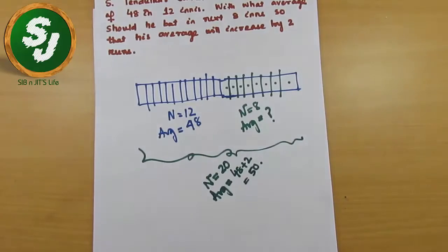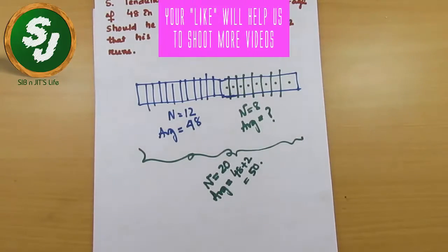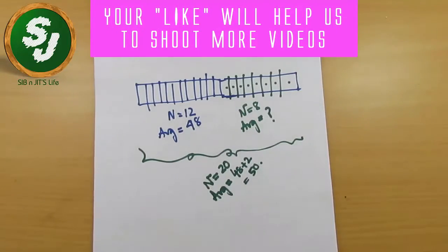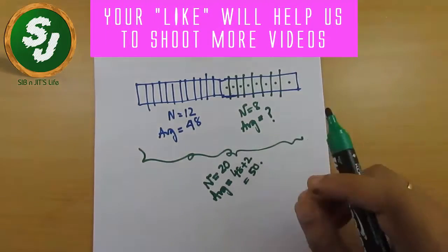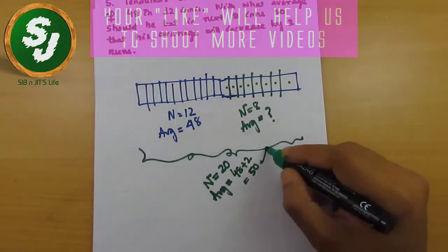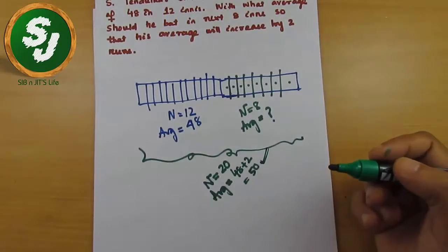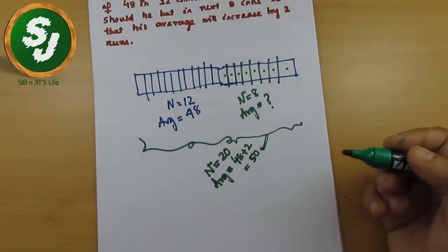This is how the mathematics is presented to you. One information was given: he batted for 12 innings with an average of 48. Then the next information is asked in the question: he will bat in 8 innings. With what average should he bat so that his net average will increase by 2 runs, making it 50.